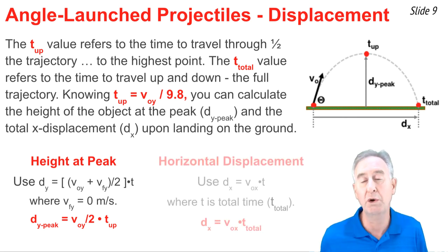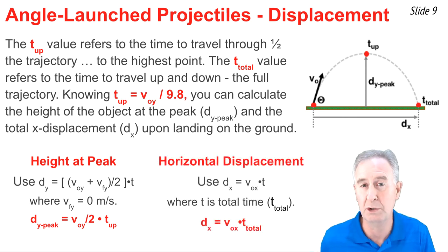To calculate the total horizontal displacement, I would use the only equation I ever use for that, and that's dx equal Vox times t. But the t in this equation is the total time, so that equation becomes dx equal V original x times t total.